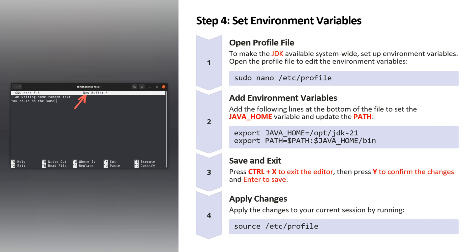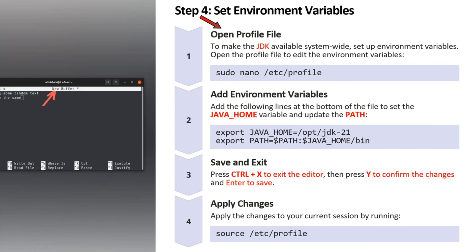Step 4 is to set environment variables. For that, you have to open the profile file using this command. To make JDK available system-wide and set up environment variables, you have to open this profile file. Then add environment variables — here you can see two lines that you have to add at the bottom of the profile file. It has JAVA_HOME pointing to the JDK folder, and PATH pointing to the bin folder. Then save the file and apply changes to your current session by running this command.